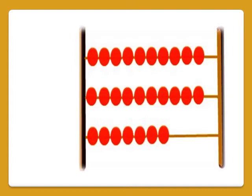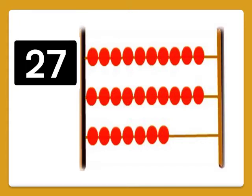So students, there are some balls. It's time to count these balls, so let's start with me. How many are there? 1, 2, 3, 4, 5, 6, 7, 8, 9, 10, 11, 12, 13, 14, 15, 16, 17, 18, 19, 20, 21, 22, 23, 24, 25, 26, and 27. So how many balls are there? 27!